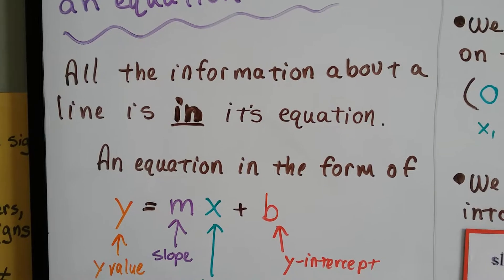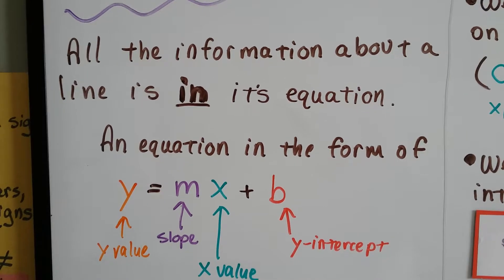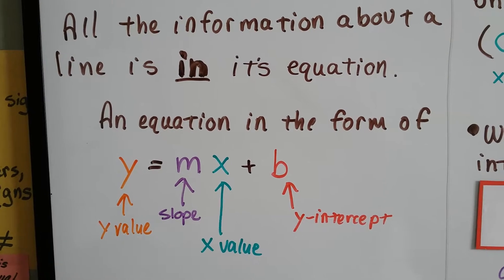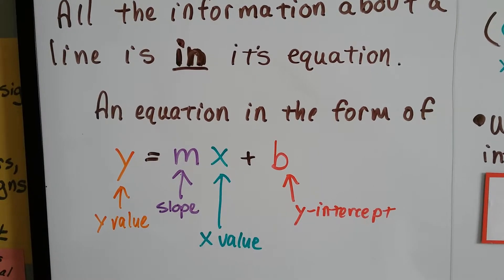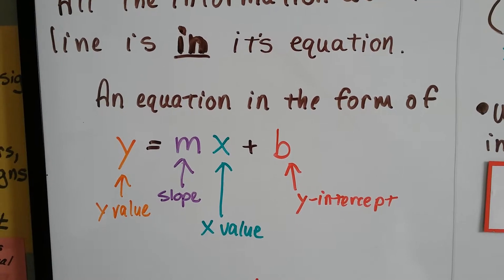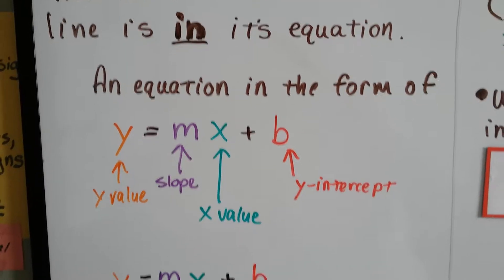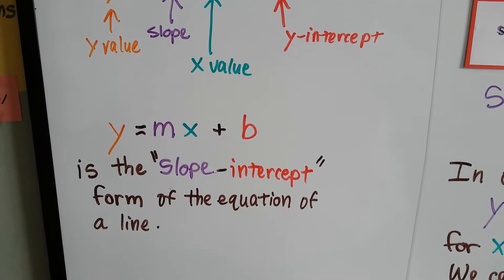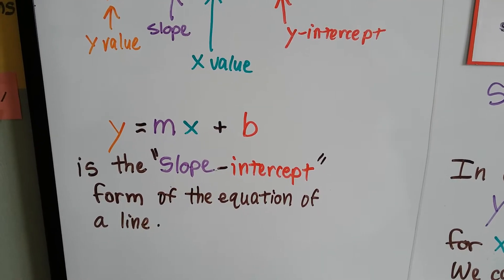An equation in the form of y equals mx plus b, the y is the y value, the m is the slope, the x is the x value, and that b is the y-intercept. It's where the line crosses the y-axis. This y equals mx plus b is the slope-intercept form of the equation of a line.